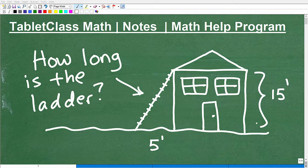So we have a house and we have a ladder with some dimensions. It looks to be that this is 15 foot high here, this portion of the house, and this is 5 foot dimension here. But we want to know how long this ladder is leaning up against the house with these dimensions. I'm going to show you exactly how to approach a problem like this.